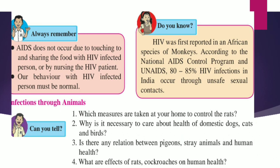HIV was first reported in an African species of monkeys. According to the National AIDS Control Program and UNAIDS, 80–85% of HIV infections in India occur through unsafe sexual contacts.